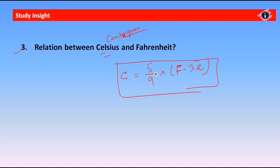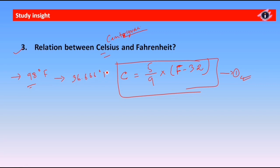The normal human body temperature is 98 degrees Fahrenheit. If you convert 98 degrees Fahrenheit to Celsius using the formula, you get approximately 36.67 degrees Celsius.